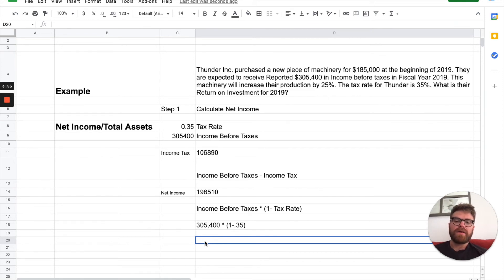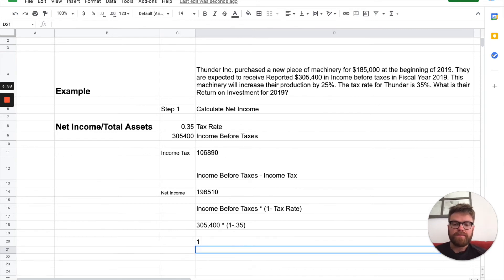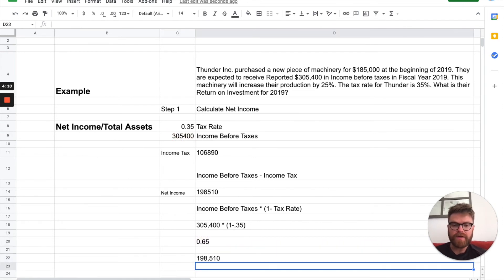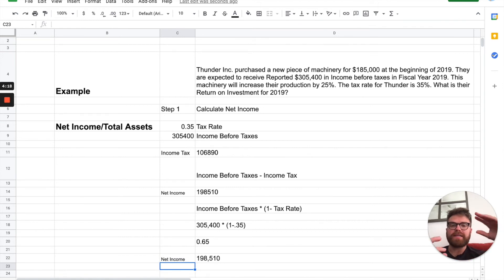Now, you can probably just do that math in your head. We can even do it right here. 1 minus 0.35 is 0.65. Then, we just take $305,400, which is your income before taxes, times 0.65. There we go. $198,510. That is your net income. So, you see there's two ways to get to it. You can multiply it times the tax rate, then subtract it from income before taxes. Or, you can just say income before taxes, times 1 minus the tax rate. Either way. So, that was step 1.